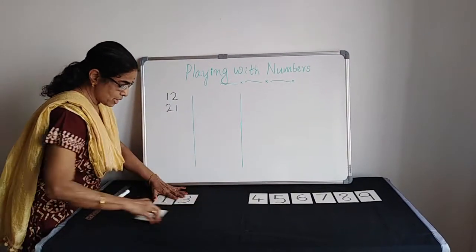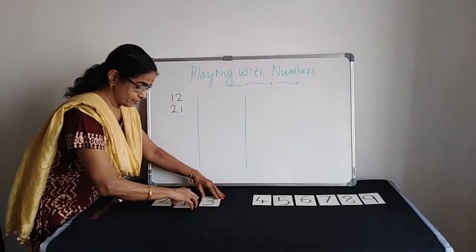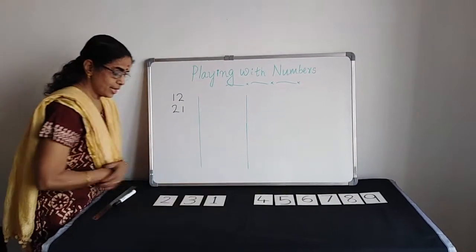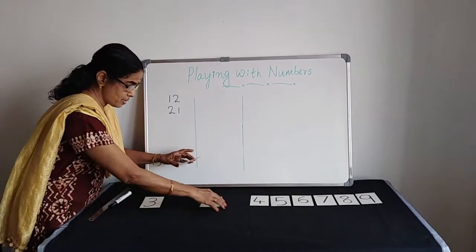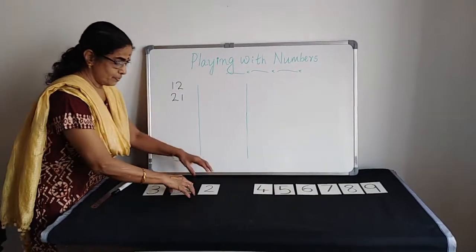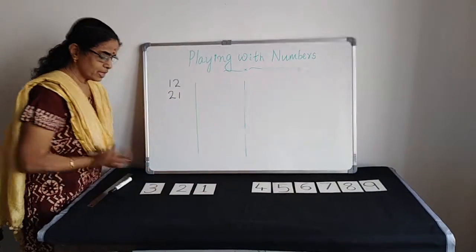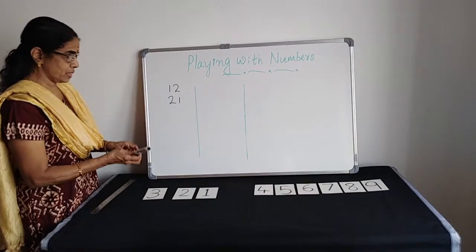Now I am going to make it with 2, 231. Now we are going to make with 3, 312, 321. Can you guess how many numbers we made? We made 6 numbers.